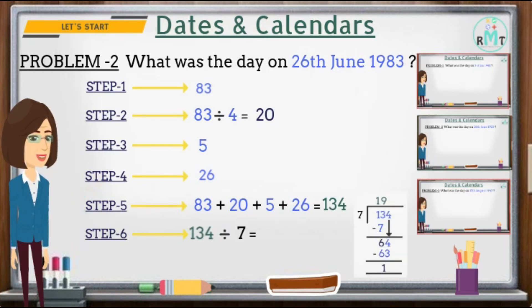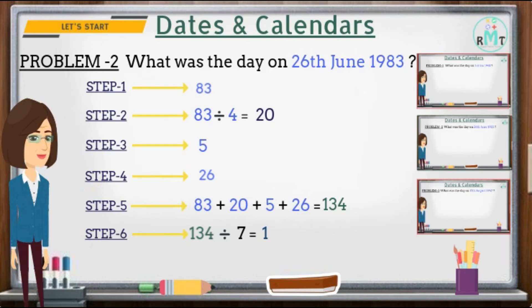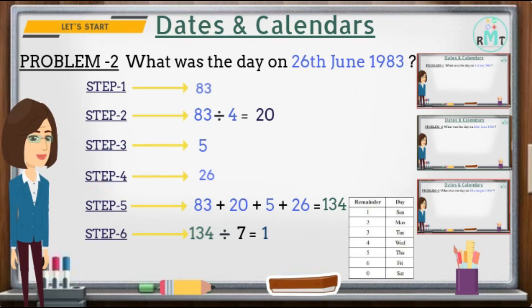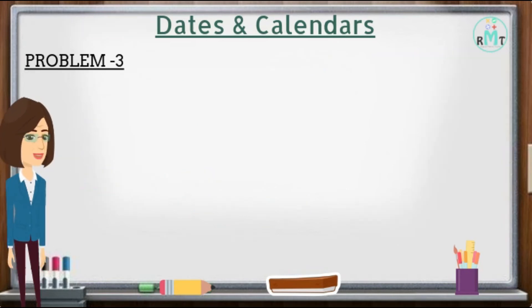Step 6: Divide 134 by 7. We get quotient equal to 19 and remainder equal to 1. We deal with the remainder only, so we write 1 as the answer. From the day key, remainder 1 corresponds to Sunday. Hence, 26th June 1983 was a Sunday.